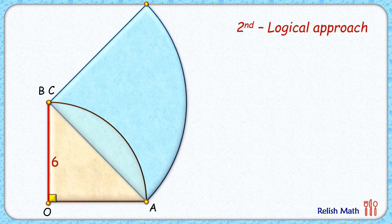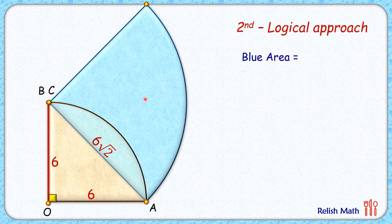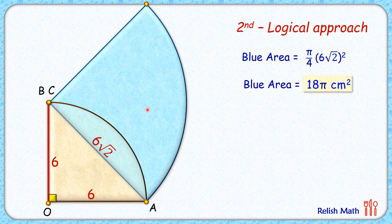This figure still meets all the original conditions of the question. The second blue quadrant has become a point quadrant. With OC equal to 6 centimeters, OA also equals 6 centimeters, and by the Pythagorean theorem CA equals 6√2 centimeters. The total blue area is: area of point quadrant (zero) plus area of this quadrant = (π/4)r² = 18π centimeters squared.